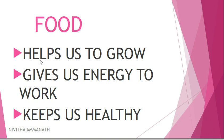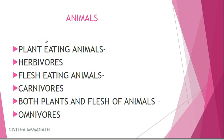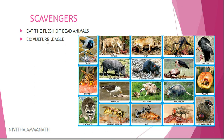Food helps us to grow, gives us energy to work, and keeps us healthy. There are three types of animals: plant-eating animals are herbivores, flesh-eating animals are carnivores, both plants and flesh of animals are omnivores. Animals like vulture and eagle eat the flesh of dead animals — they are called scavengers. We will teach animals' eating habits.